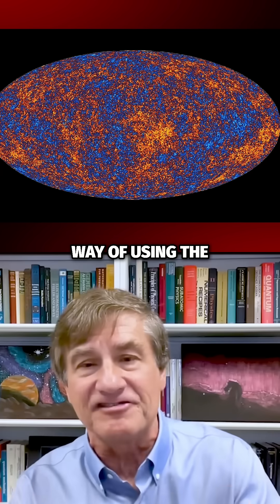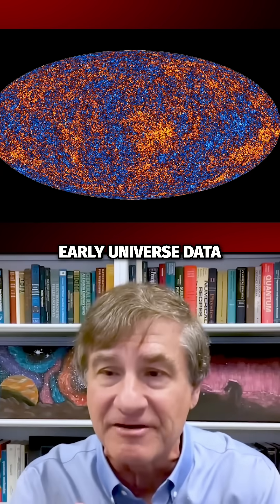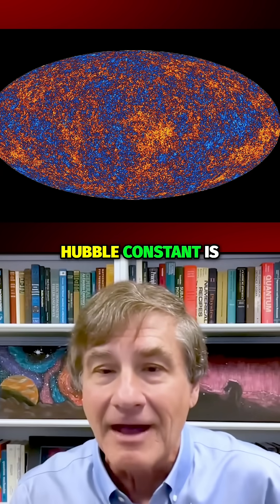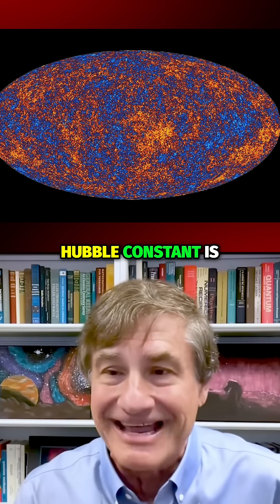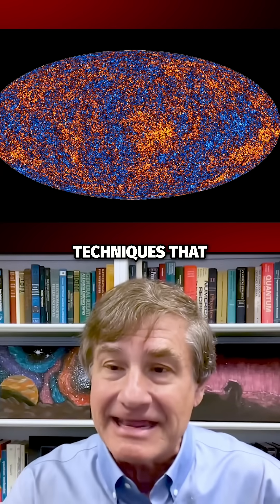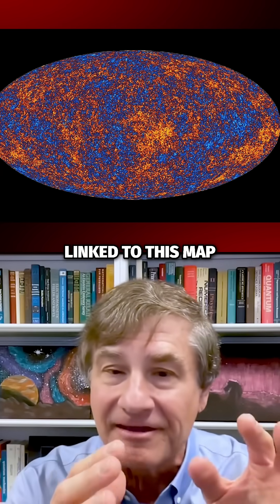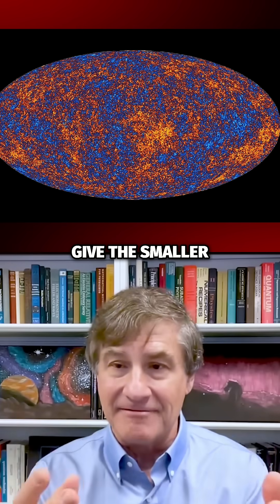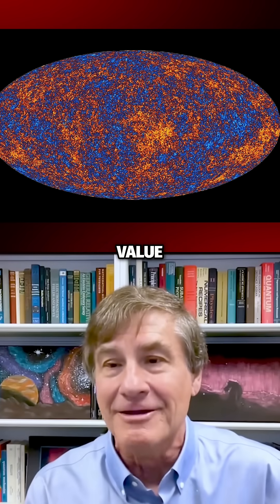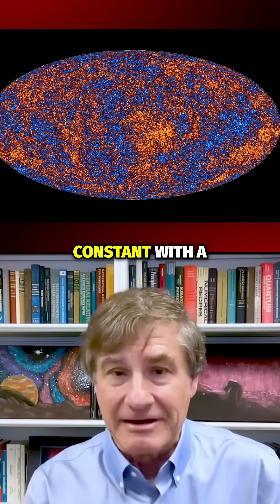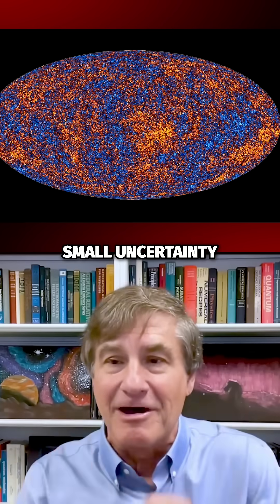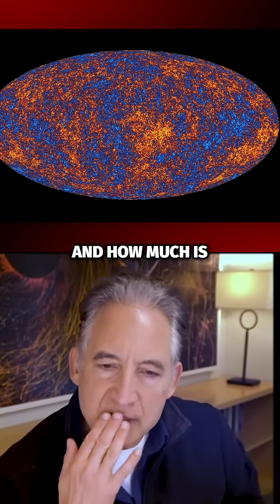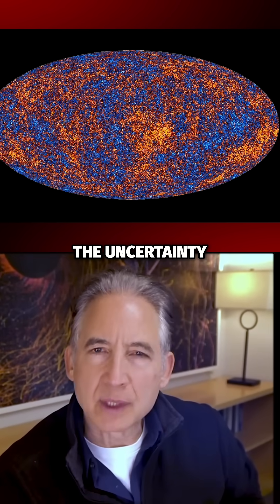And that's another way of using the early universe data to predict what the current Hubble constant is. All of the techniques that are somehow linked to this map of the early universe give the smaller value of the Hubble constant with a very small uncertainty. And that's the tension. And how much is the uncertainty now?